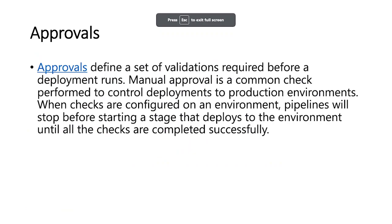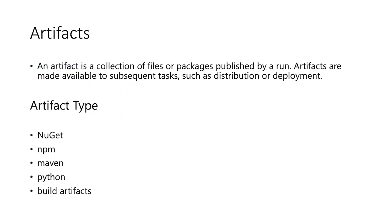Next we have approvals. Approval is a set of validations or checks done before a deployment runs. Whenever you perform a deployment, you need to do a set of validations — that's what we generally call approvals. Manual approval is a common check performed to control deployment to a production environment, and it is very widely used.